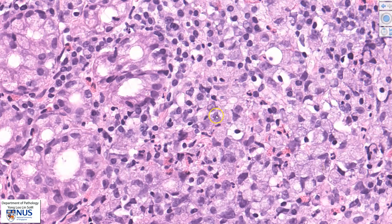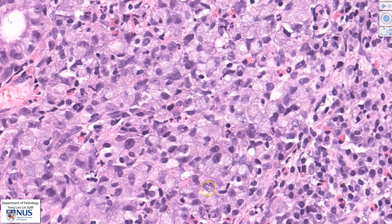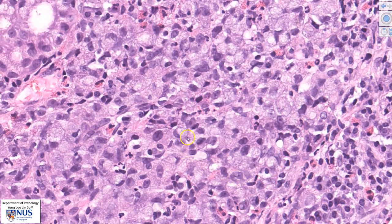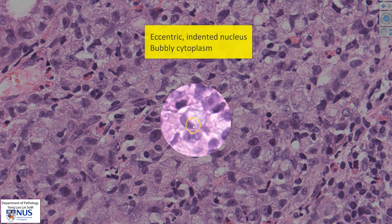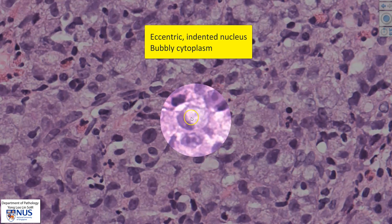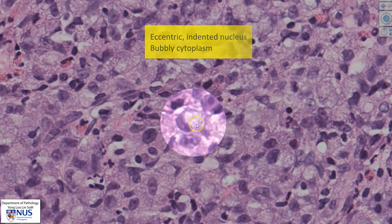The malignant cells have prominent nucleoli. Focusing on one cell, the nucleus is very eccentric — it is literally touching the cytoplasmic membrane at the edge of the cell, and is indented by the cytoplasm. The cytoplasm appears somewhat grayish and bubbly.